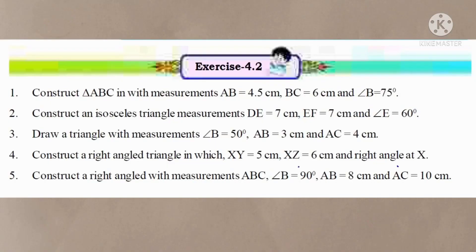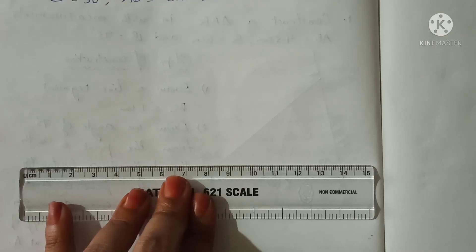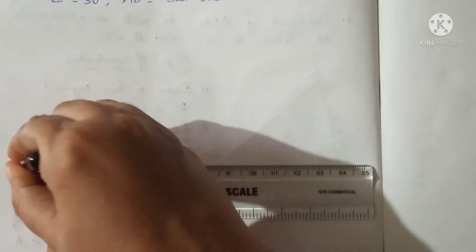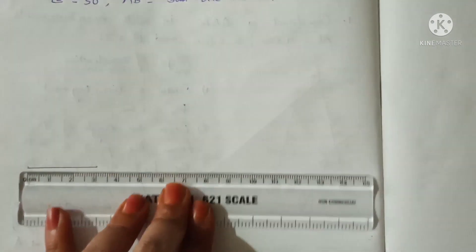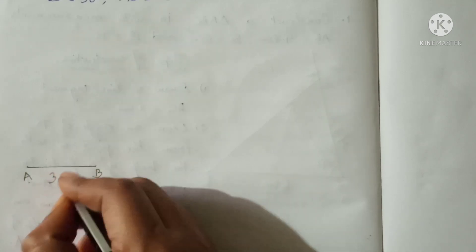Question 3: draw a triangle with measurements angle B equal to 50 degrees, AB equal to 3 centimeters, and AC equal to 4 centimeters. First, draw AB equal to 3 centimeters. Mark a point at 0 and a point at 3, then join these two points. This line segment is AB with length 3 centimeters.